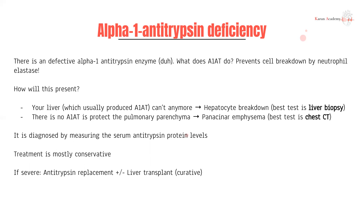The liver, which is meant to produce alpha-1 antitrypsin, can no longer do so. You end up with hepatocellular breakdown due to accumulation of the enzyme's precursor within the hepatocytes — that's toxic, causing hepatocyte breakdown. The best test for that is a liver biopsy.